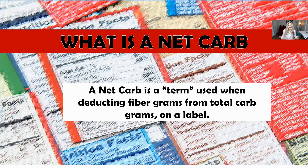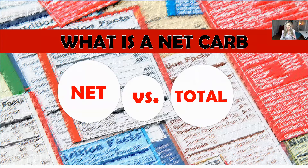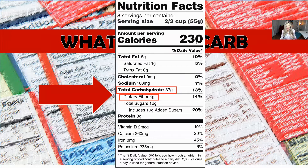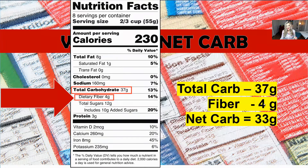I had a great question about net carbs and I wanted to address it — we're going to talk about what it is and why we need to know what a net carb is. A net carb is a term used when you are deducting your fiber grams from your total carb grams on a label. When you look at the label, you'll see the calories, the fat, and you're always going to get a total carbohydrate number in grams. So that's 37. A net carb is when they say you should take away the dietary fiber and deduct that from the total carbs.